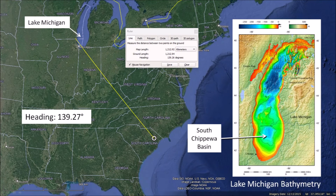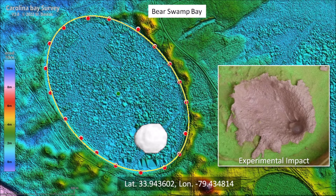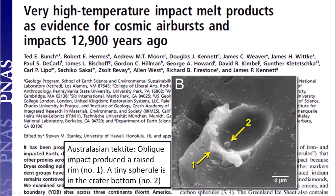The heading of Bear Swamp Bay is 139.27 degrees. By extending this heading as a great circle trajectory toward the Great Lakes, we find that it leads to the convergence point of many other Carolina Bays just west of Lake Michigan. The South Chippewa Basin in Lake Michigan was speculated to be the site of one of several extraterrestrial impacts in a book by Richard Firestone published in 2006. Ellipses are conic sections, so it is not surprising that impacts that create inclined conical cavities look elliptical when viewed from above. The penetration funnels have flanges that become raised rims, as can be demonstrated by experimental impacts. A paper published in 2012 by Ted Bunch and several co-authors has an illustration of an Australasian tektite that shows the raised rims of an elliptical impact cavity.